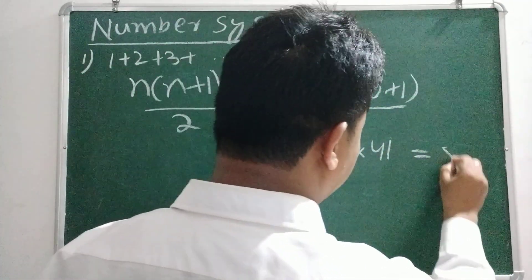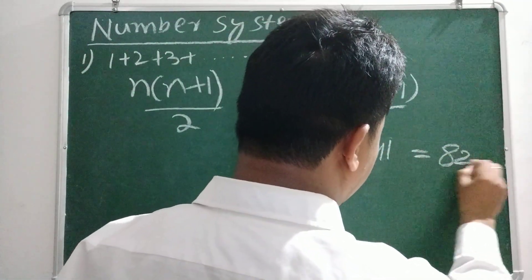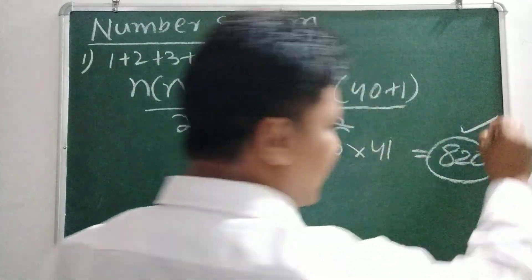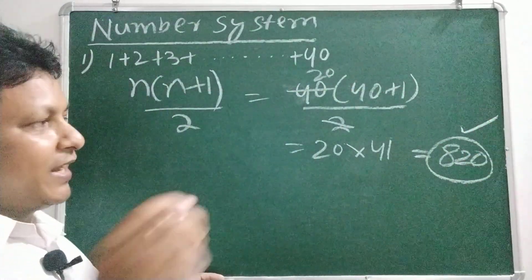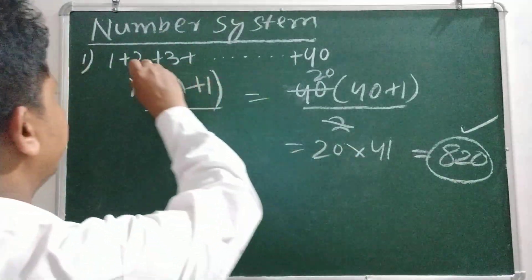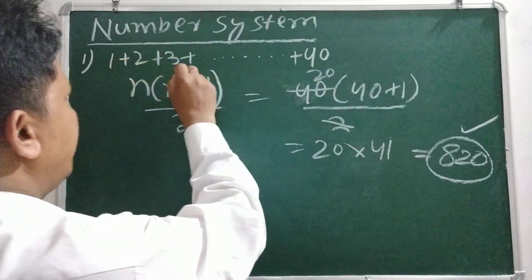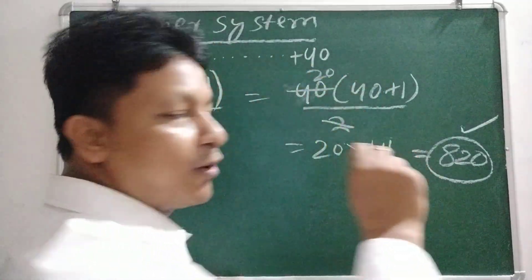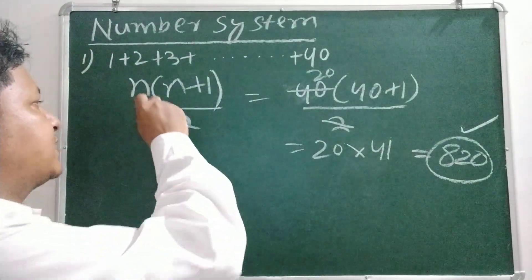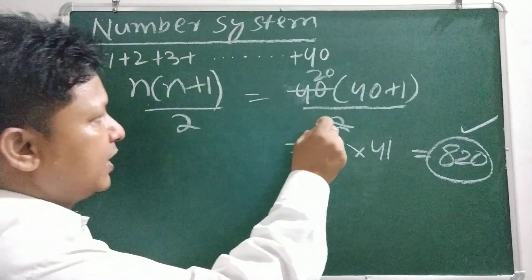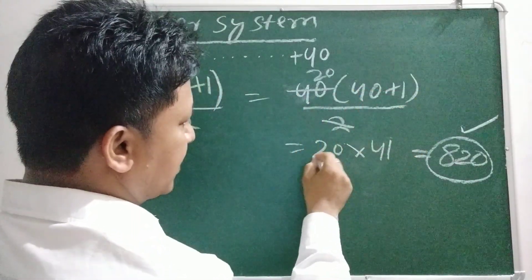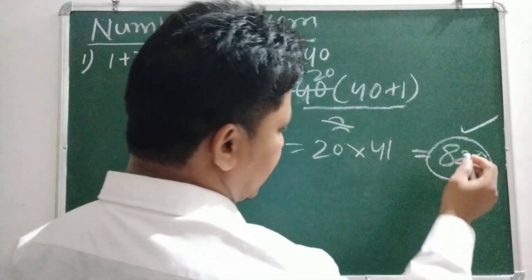41 is less than 80. The answer is 800. This is the sum of all natural numbers. The sum of all natural numbers is n into n plus 1 by 2. The answer is 40 into 41 by 2, which equals 800.